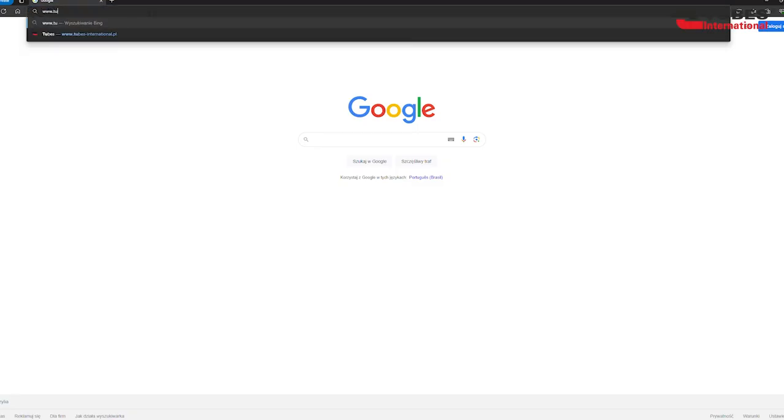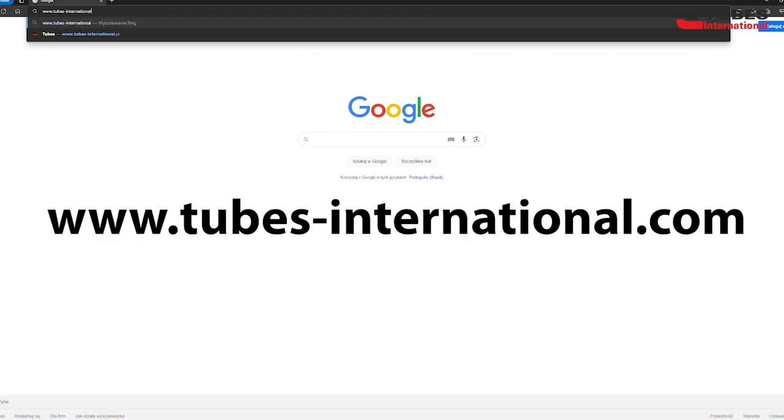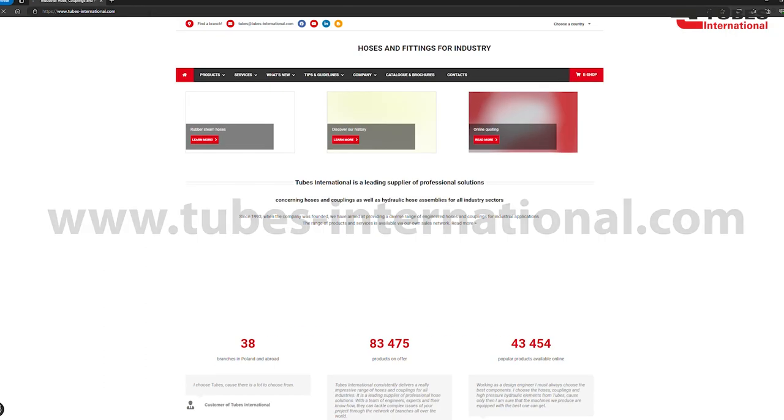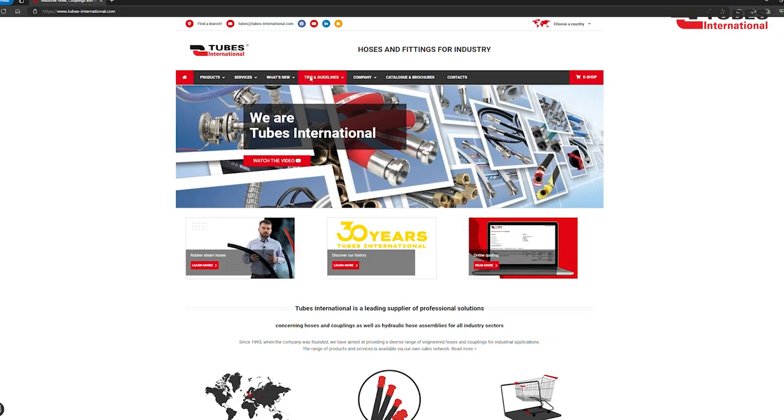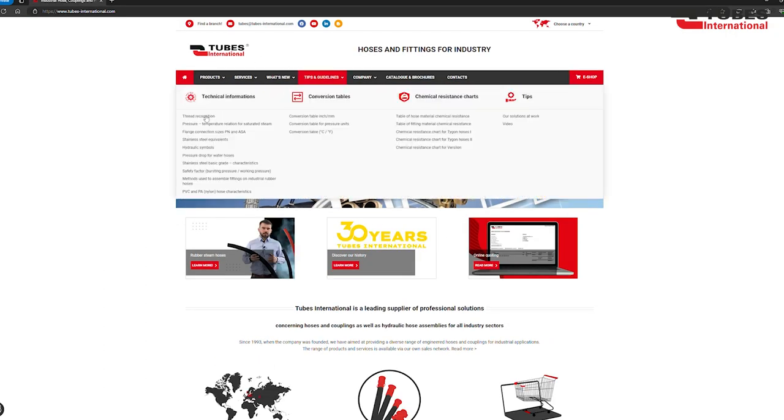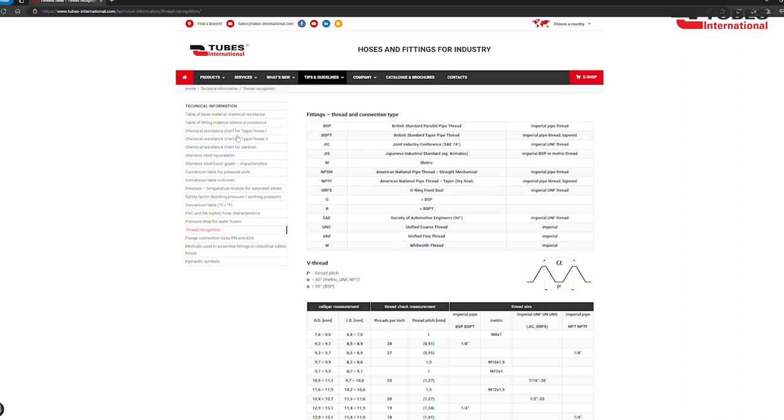Once we know the diameter and pitch, we move on to the thread recognition chart. Visit the website www.tubesinternational.com. Choose Tips and Guidelines, then under the Technical Information tab, select Thread Recognition.